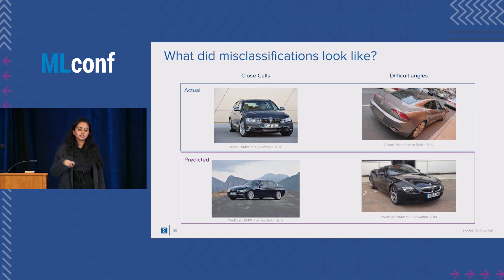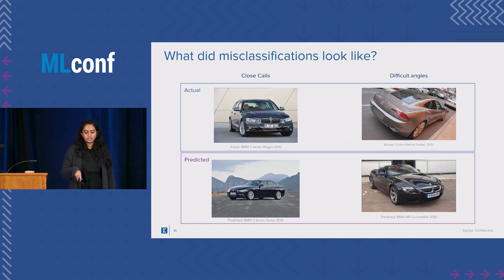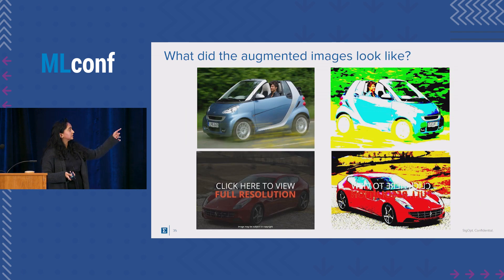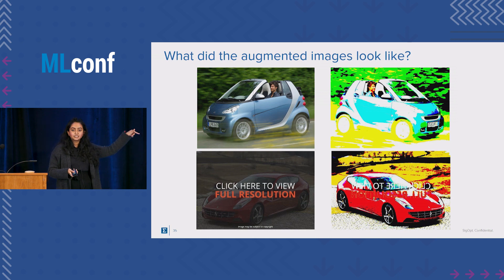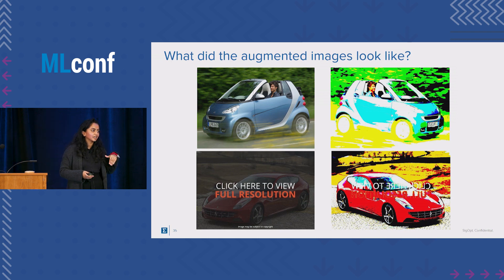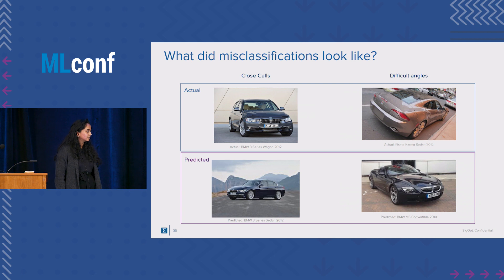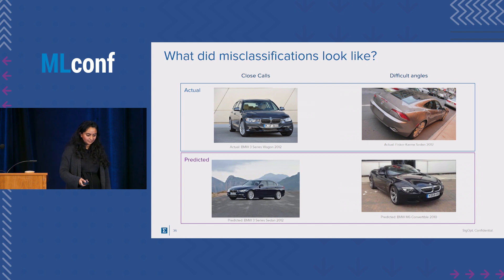What did misclassifications look like this time? We still had close calls and problems with difficult angles, but we were able to solve the problem of background clutter. We hypothesize this is because the hyper-vibrant images define contrast and boundaries more clearly, making the background more understandable. Close calls and angle issues could potentially be solved by introducing rotations and using more than one augmented image per original — but that's also future work.